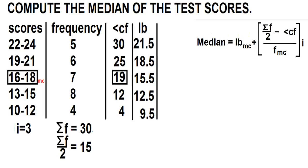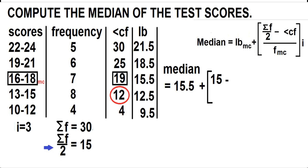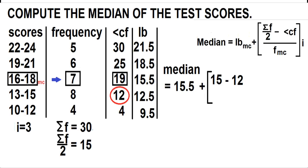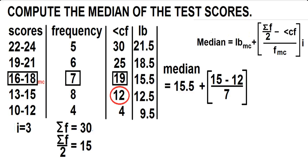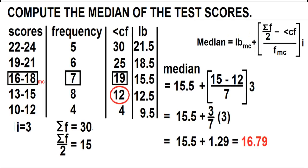Now let's use the formula. The lower boundary of the median class is 15.5. One-half of the total frequency is 15, minus the cumulative frequency of the lower class next to the median class, which is 12. The frequency of the median class is 7, and the class width is 3. 15.5 plus 3 over 7 times 3 equals 15.5 plus 1.29, which equals 16.79.